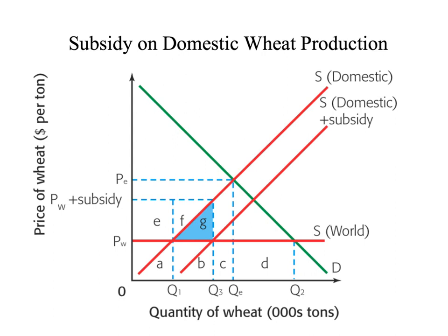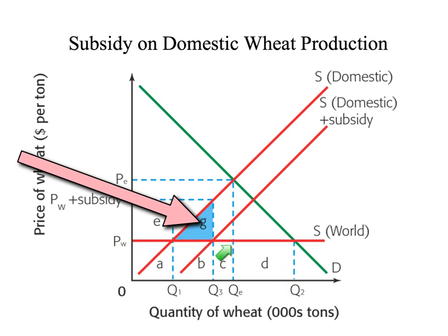This deadweight loss shows up in a very odd portion of the graph, so pay attention. There's no loss of consumer surplus because the price of wheat doesn't change — the price in the marketplace is still P.W. However, consumers are indirectly affected as the government will use tax revenues to fund these subsidies. Q2 is still being purchased in the marketplace; it's just that production has shifted from more efficient foreign producers to less efficient domestic producers. The subsidy will have to be paid for, which may mean higher tax payments and an opportunity cost in terms of reduced government spending on other things.